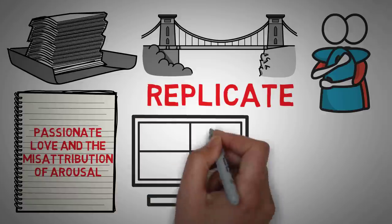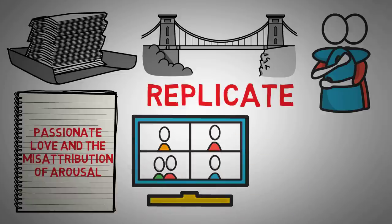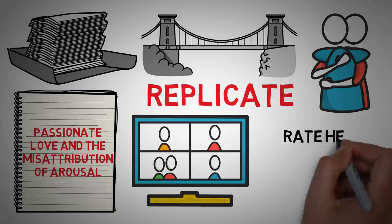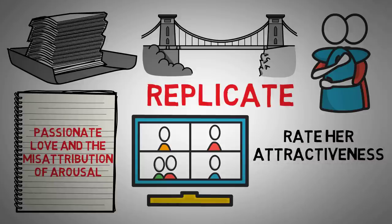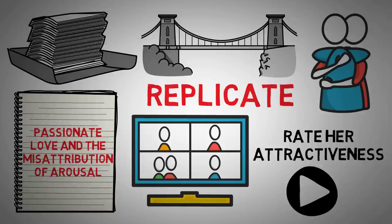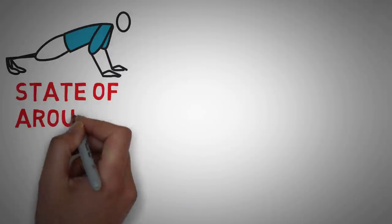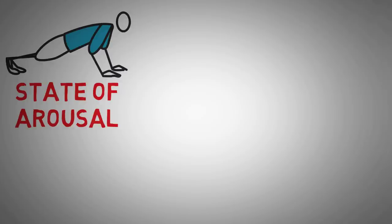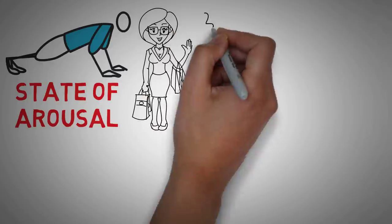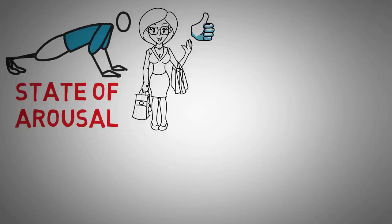Anyways, the publication involved two different experiments in which men were asked to watch a video of a woman talking about themselves and then rate the attractiveness of that woman. The videos were filmed in a way to make the woman appear more or less attractive. Some men were put through exercise tests before the video in an attempt to create a state of arousal. The researchers found that the aroused men weren't just more likely to rate the attractive woman as attractive than the control group. They were also more likely to rate the unattractive women as less attractive.